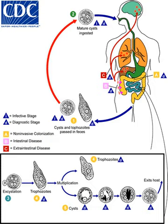Diagnosis is typically by stool examination using a microscope, but may not reliably exclude infection or separate between specific types. An increased white blood cell count may be present in severe cases. The most accurate test is finding specific antibodies in the blood, but it may remain positive following treatment. Bacterial colitis can result in similar symptoms.